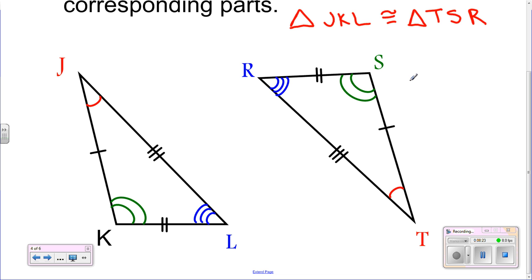And it says identify all pairs, so you can start by either looking at here or looking at the figure. Angle J is congruent to angle T, angle K is congruent to angle S, and angle L is congruent to angle R.